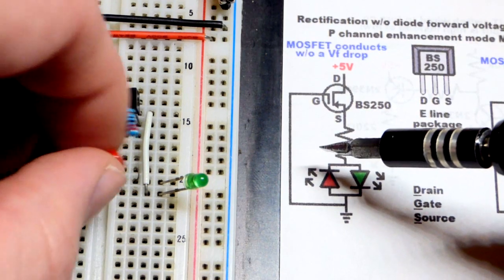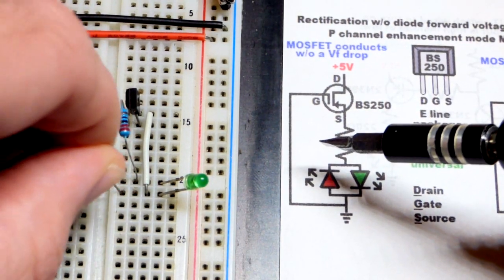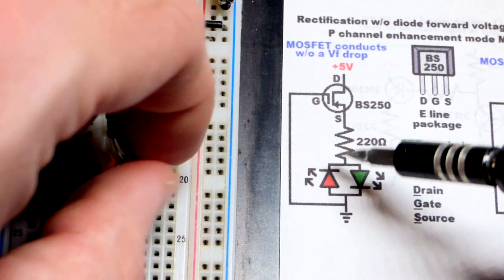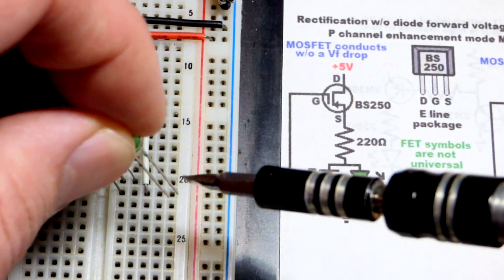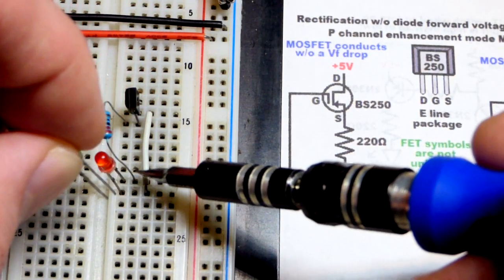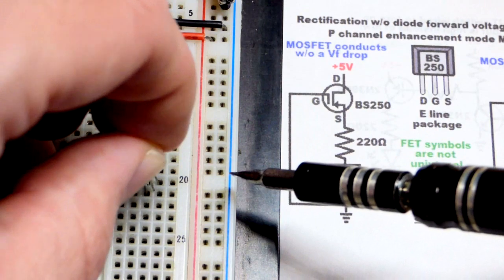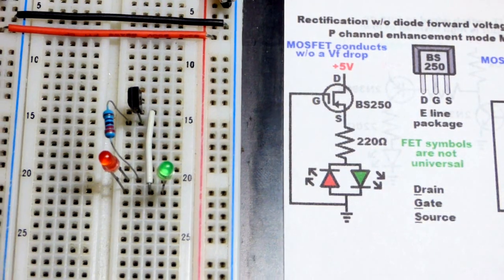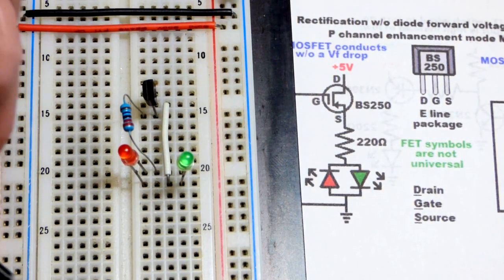Short lead the cathode of the red LED to the resistor, long lead the anode down, and then the green LED wired the opposite direction. Long lead the anode to the resistor, short lead the cathode down one row. That's really about it for this circuit.